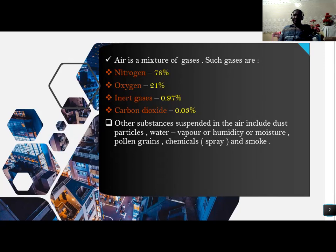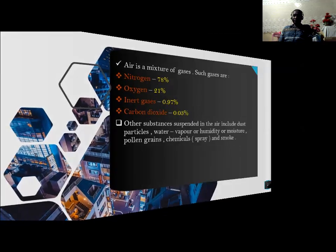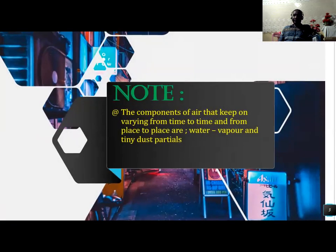Other substances suspended in the air include dust, water vapour for humidity and moisture, pollen grains, chemicals such as sprays, and smoke. The components of air that keep changing from time to time and from place to place are water vapour and tiny dust particles.